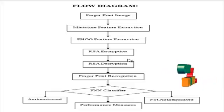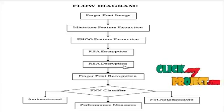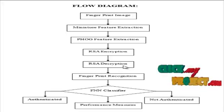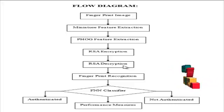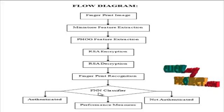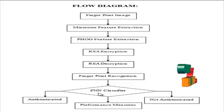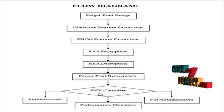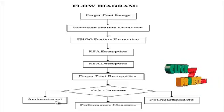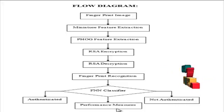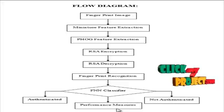The extracted feature values are saved. During the matching process, the fingerprint feature values are decrypted using the RSA process. A new key is generated and the encryption is reversed to obtain the feature points. These extracted feature points are then used for the fingerprint recognition process. Fuzzy nearest neighbor classification methodology is used. The classifier categorizes the input fingerprint images as authenticated or not authenticated. Finally, the performance of the classifier is measured based on the accuracy of the process.